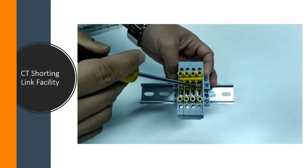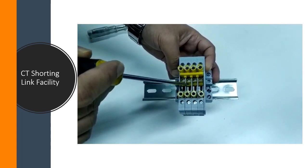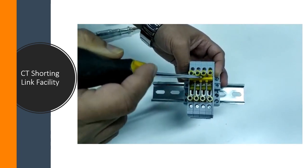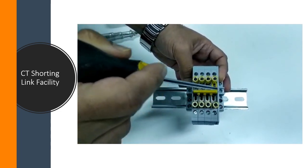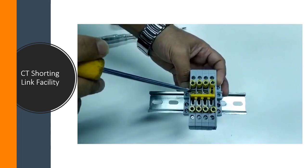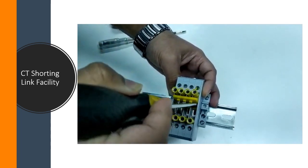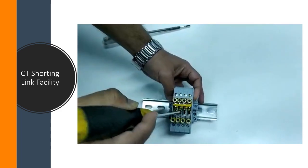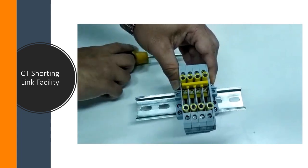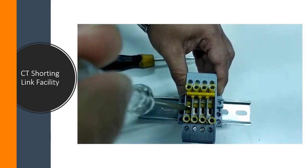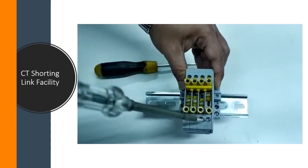All three phases and neutral are connected. For normal operation, these four sliders remain in connected position. For charging, the customer has to isolate the shorting link so all three phases and neutral will be connected to the relay from the CT. For secondary injection, first this slider has to be moved back to the shorting position and then these three phases should be removed from their position.